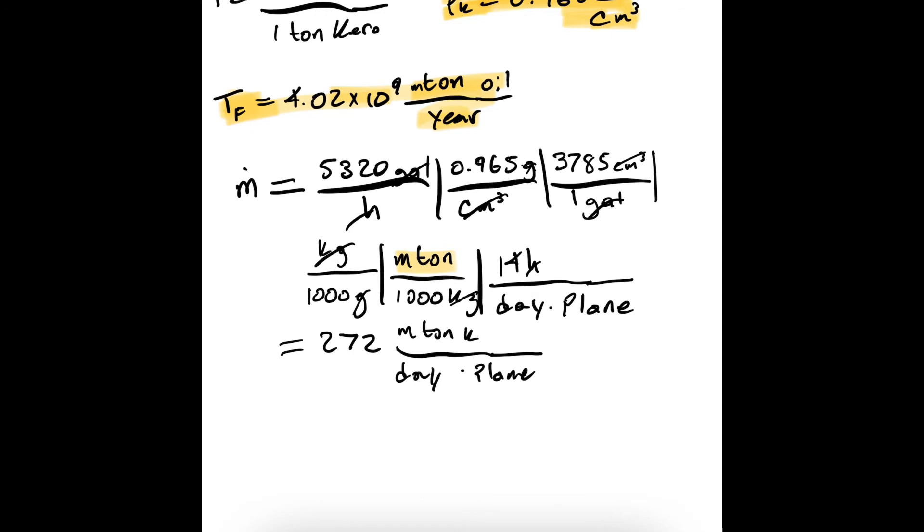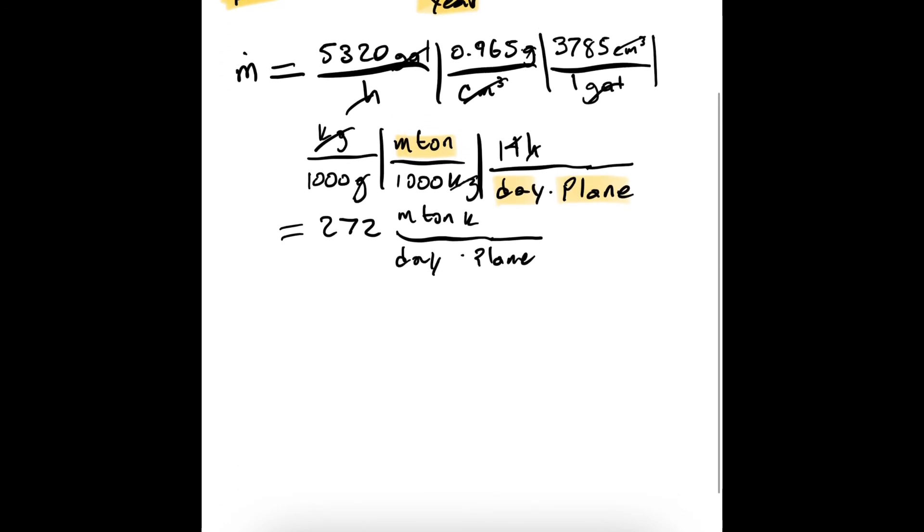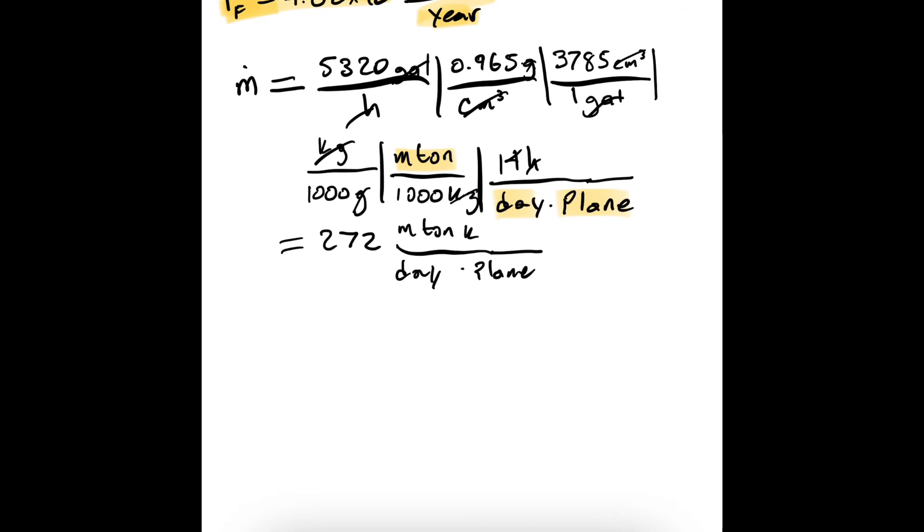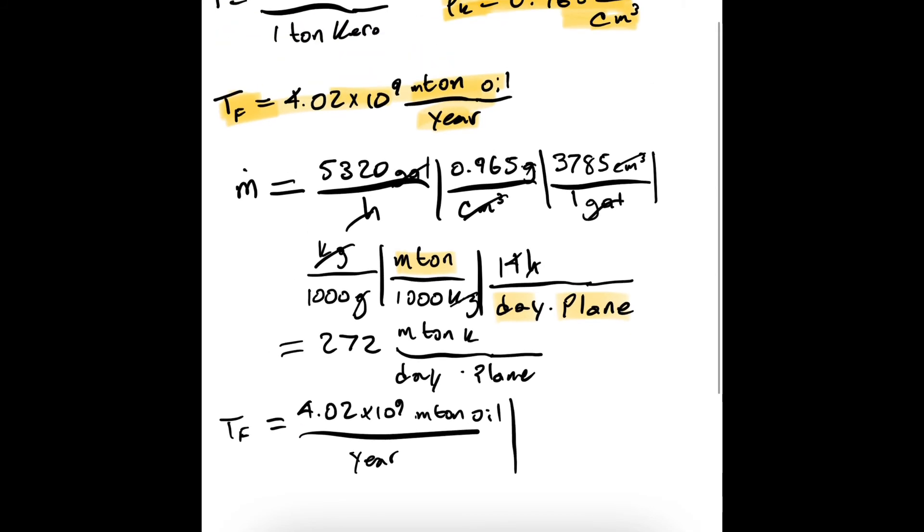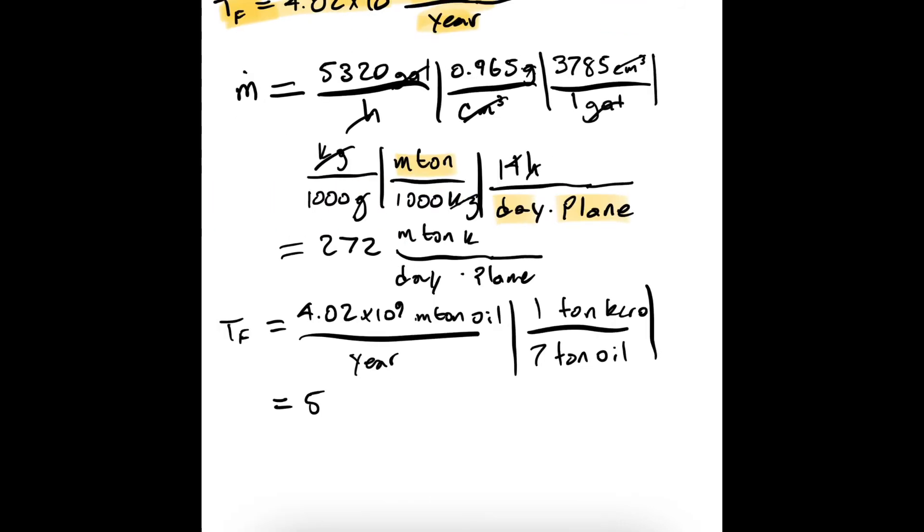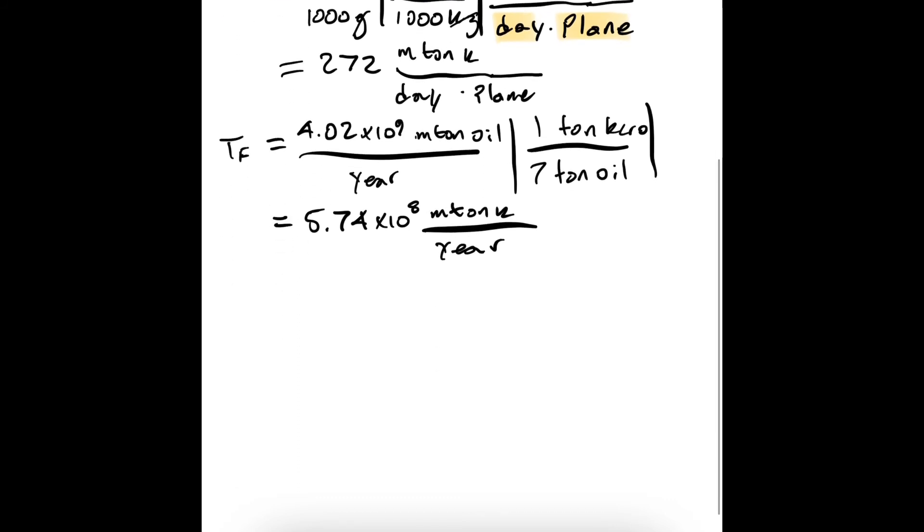So now we need to convert our total amount of oil into a total amount of kerosene. TF needs to be converted from 4.02 times 10 to the 9 metric tons of oil to kerosene per year. Good thing they gave us that conversion factor. That's 5.74 times 10 to the 8 metric tons of kerosene per year.